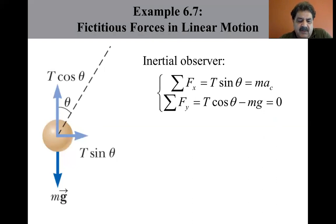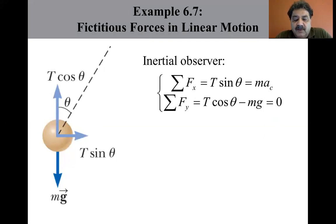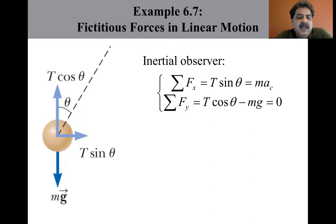According to the non-inertial observer riding in the teacup, the string also makes an angle θ with the vertical. To that observer, however, the smartphone is at rest and its acceleration is zero. Therefore, the non-inertial observer introduces a fictitious force in the horizontal direction to balance the horizontal component of T, and claims that the net force on the smartphone is zero.